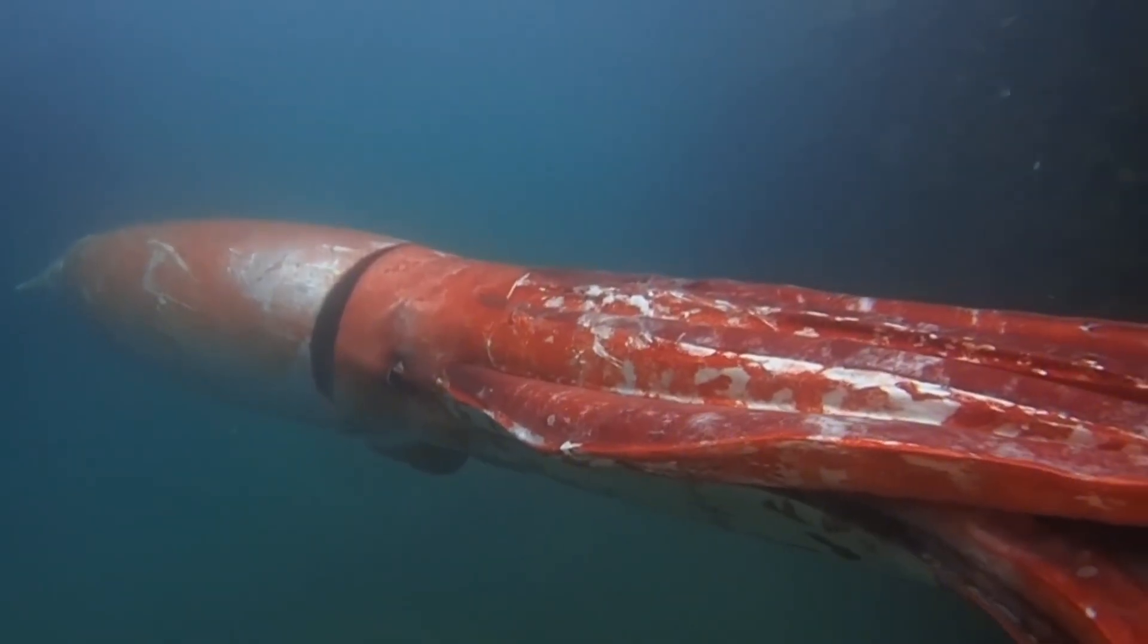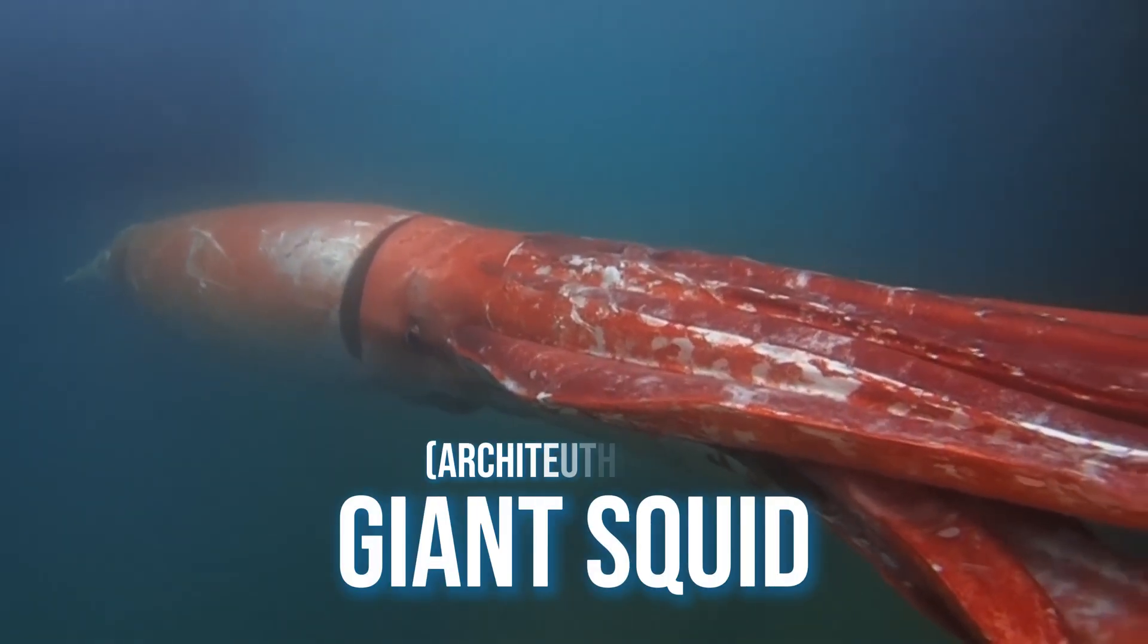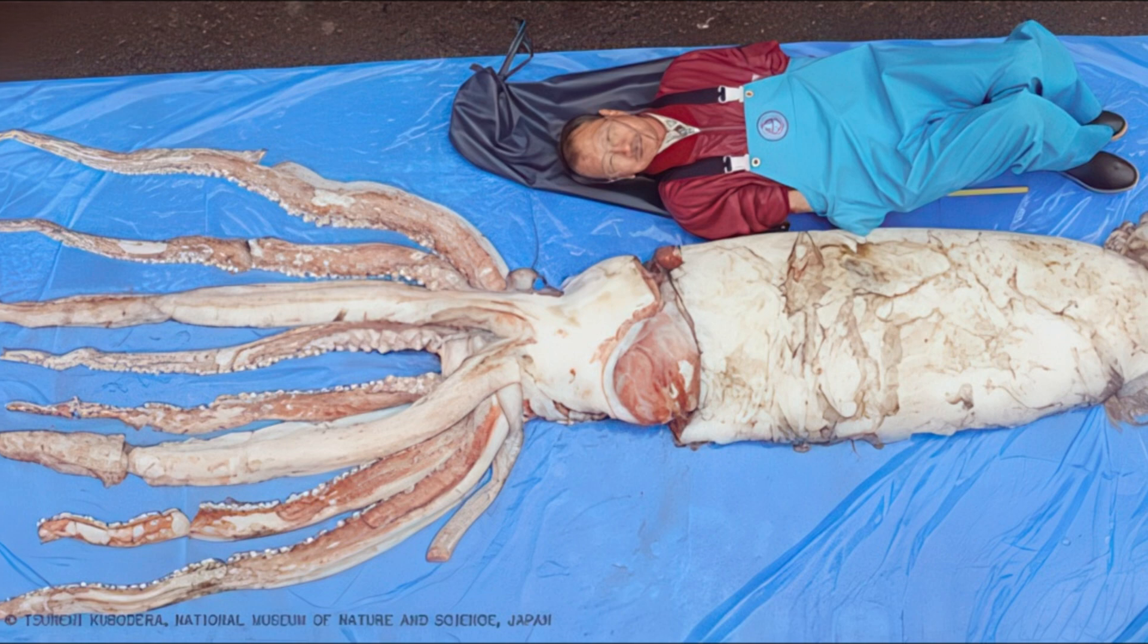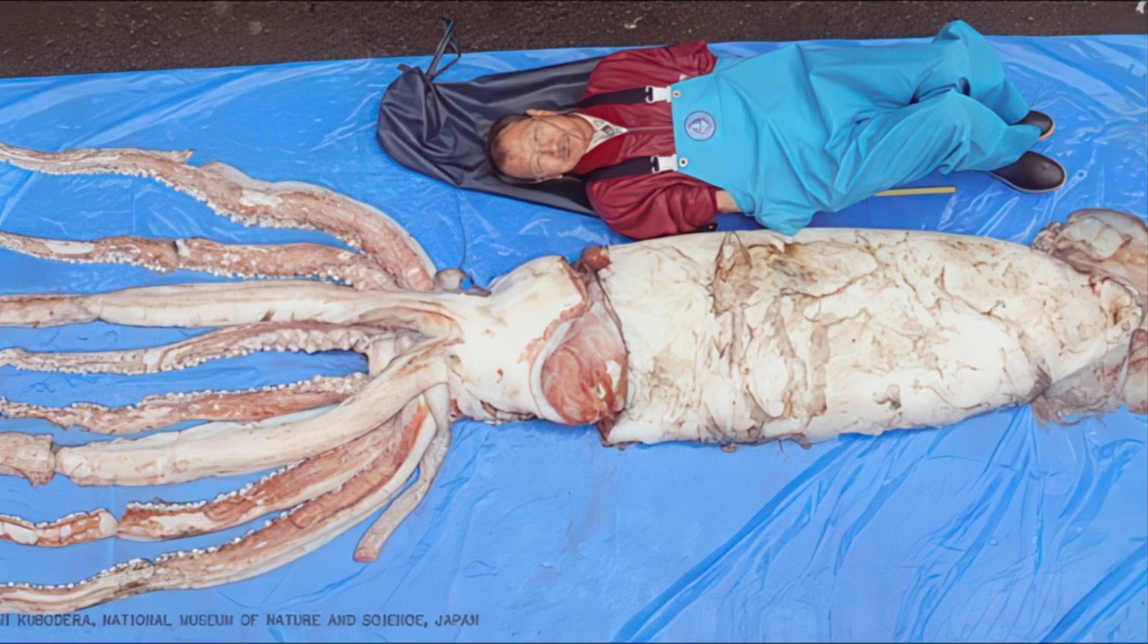At the bottom of the midnight zone, roughly two and a half miles beneath the surface, lives the largest member of the cephalopod family, the giant squid, Architeuthis dux. It can reach lengths over 45 feet, about the size of a two-story bus, and its eyes are as large as dinner plates, the biggest in the entire animal kingdom.